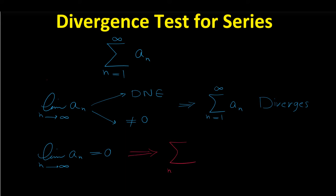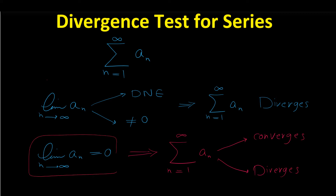Maybe the given series converges or maybe it diverges — we cannot say anything about convergence or divergence. So as you can see, this test is useful to prove that a series is divergent. With this test we cannot prove convergence. So if we use this test and the limit of a sub n as n goes to infinity does equal 0, we have to use other tests to check if the series converges or diverges.